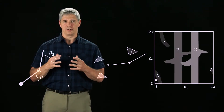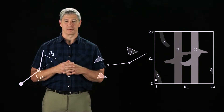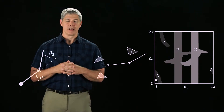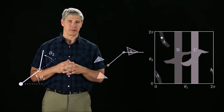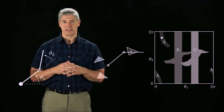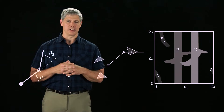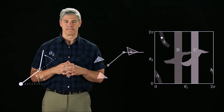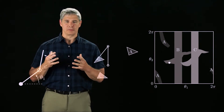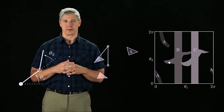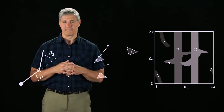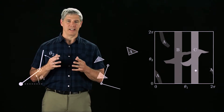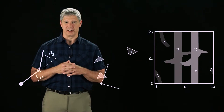We can add two more obstacles and get the final picture of the robot's C-space. An example configuration in collision with obstacle A is shown here. Theta 1 is 45 degrees, and theta 2 is 315 degrees. Next, we see an example configuration in collision with obstacle B, and finally a configuration in collision with obstacle C.